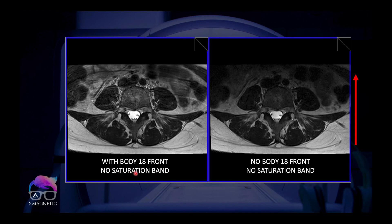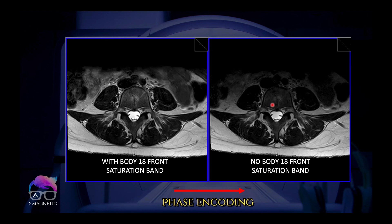If you're not using a saturation band, you'll more likely get respiratory artifacts in the AP phase encoding direction. These breathing artifacts will go through your image giving suboptimal results. However, if you don't want to use a saturation band, remember to turn off the front elements - but the pitfall is then you'll have inhomogeneous signal intensity, as shown in the earlier image.